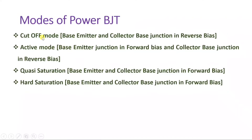Normal BJT has three modes: cutoff, active, and saturation. The junction polarities remain the same for Power BJT, but the key difference is that Power BJT has two saturation modes — quasi-saturation for lower power handling and hard saturation for higher power handling. Let us now understand all these modes through the VI characteristics.